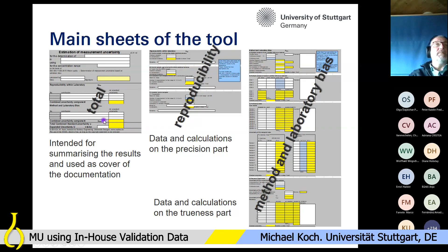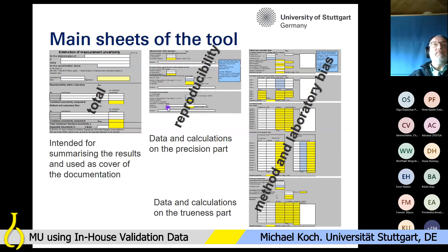In the sheet 'Reproducibility' we see three gray blocks for the three different possibilities, which I will show in the next slides. For 'Method and Laboratory Bias' we see four blocks for the four possibilities described in ISO 11352.